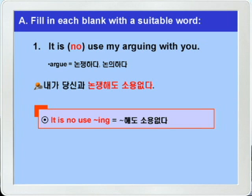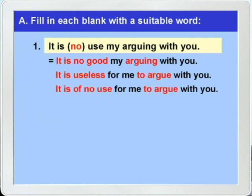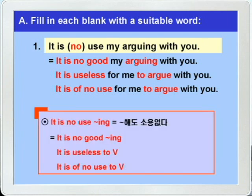정답과 함께 기본법 설명에서 배운 것처럼 문장을 전환해 보겠습니다. 'It is no use my arguing with you.' 'It is no good my arguing with you.' 'It is useless for me to argue with you.' 'It is of no use for me to argue with you.' 첫 번째 문장은 use 대신에 good을 집어넣어서 'it is no good -ing' 이렇게 쓴 것이고, 두 번째·세 번째 문장은 useless와 of no use를 사용해서 to부정사를 사용한 것이죠.